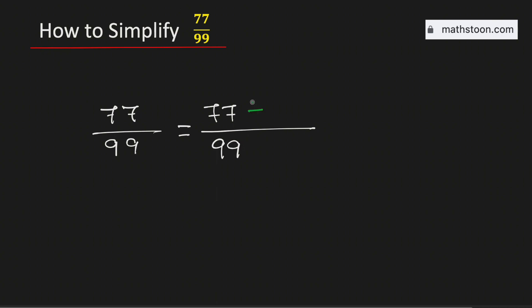Therefore, to simplify this fraction we will divide both the numbers by 11, and by doing so we will get 7 over 9.